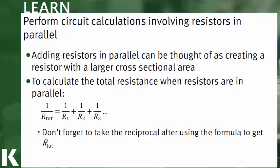Adding resistors in parallel can be thought of as just creating a resistor with a larger cross-sectional area. If we think back to our formula for resistance with our resistivity, we know that resistance is equal to the resistivity times the length over the area. So if we were to increase the cross-sectional area of the resistor, we would have an overall decrease in the resistance.